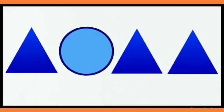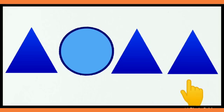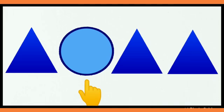It's an odd one out. So let's cross out the mushroom. Children, what can we see here? Yes, some shapes. I can see a triangle, then a circle, then a triangle and one more triangle. So which shapes are same here? Yes, the triangles are same. And the circle is different. So let's cross out the circle.